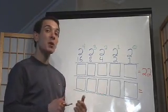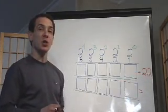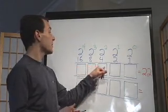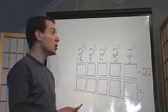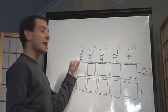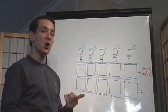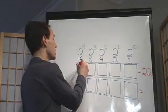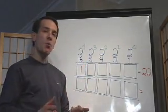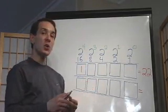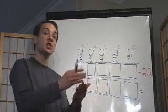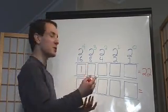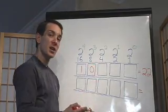So first, I want to put the number 22 in binary. What we're going to do is think about how many of each place value are in 22. I'm going to start with my biggest — how many 16s are in 22? Well, there's one 16 in 22. So if I've used up one 16, there's still 6 left, because from 16 to 22 is 6 more. So 8 is too much — I only have 6 left over, so there's no 8s.